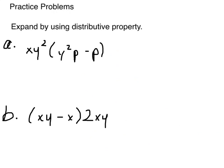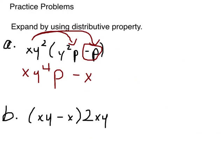These two are going to say expand by using distributive property. So that means I'm going to multiply this xy squared over this term and over this term, keeping this sign with it. So when we multiply this, we have x, we have y squared times y squared, which is y to the fourth, p, minus xy squared p.